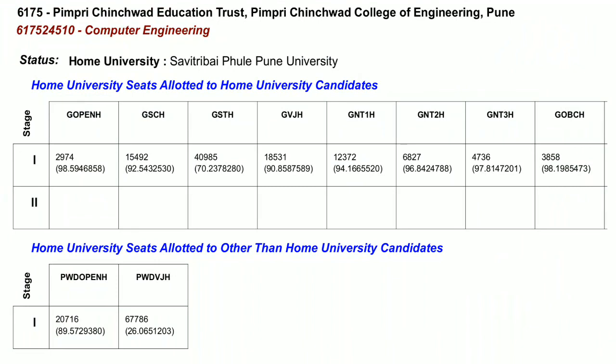Computer Engineering branch code is 617524510, for first shift. Then Home University — Savitribai Phule Pune University. Home University seat allotted to Home University candidate cut-off: the number outside the bracket indicates the state merit list number, and the number inside the bracket indicates the percentile score. First we will discuss the general open category cut-off.